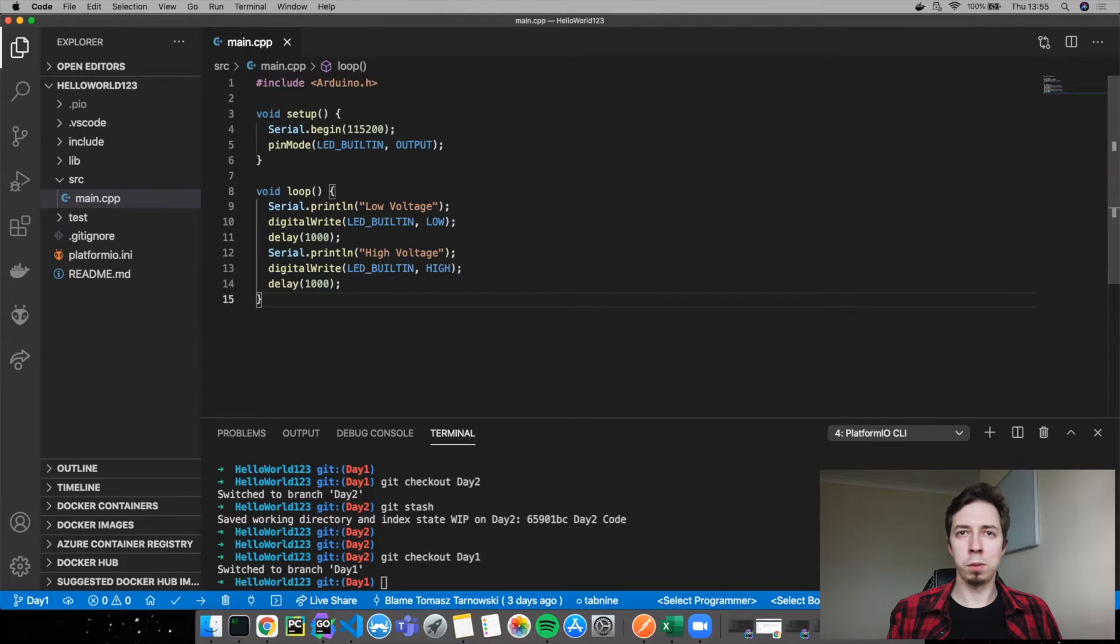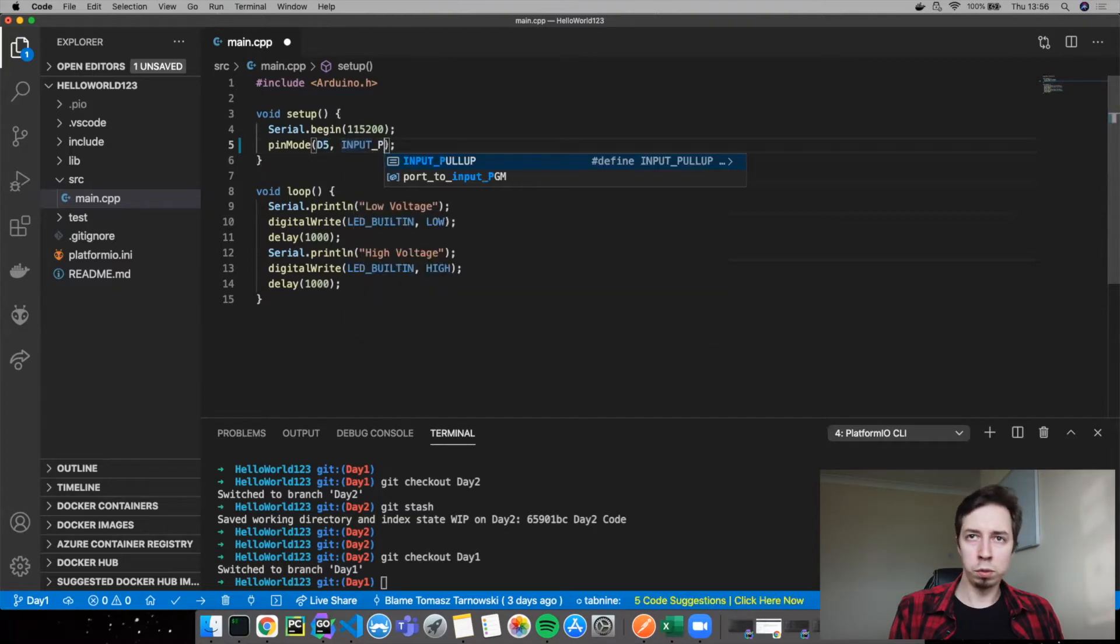Okay. Let's move to the code now. So, what we've got here is the code from day one. And I'm going to modify it. I'm going to start here by changing the pin mode. The first argument to D5. This is the pin I connected the button to. And this time, the mode is going to be INPUT_PULLUP. Why INPUT_PULLUP, not INPUT, I'm going to explain in a second. But for now, let's just keep INPUT_PULLUP.